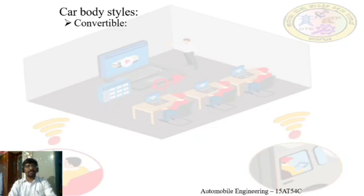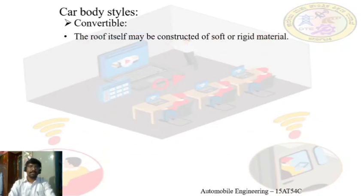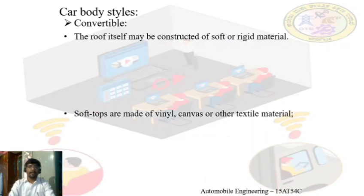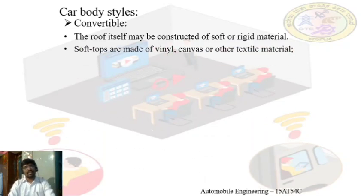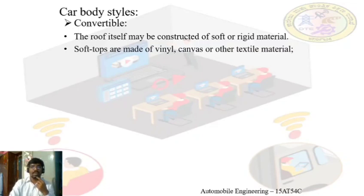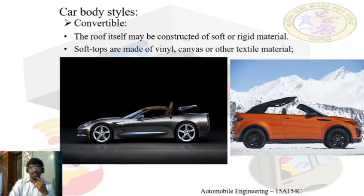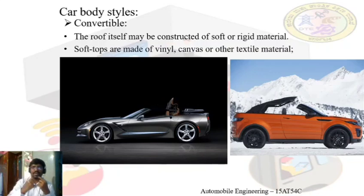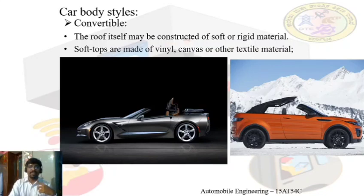In the convertible body style there are two types. One option is to design the roof with soft material — made of vinyl, canvas, or any textile or cloth material. This animated GIF shows an example of a soft material retractable roof, demonstrating how the roof folds and retracts into the back side of the car with the push of a button. This is an example of a soft top convertible.